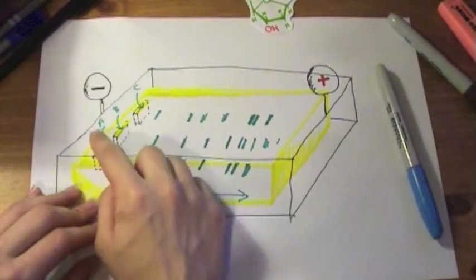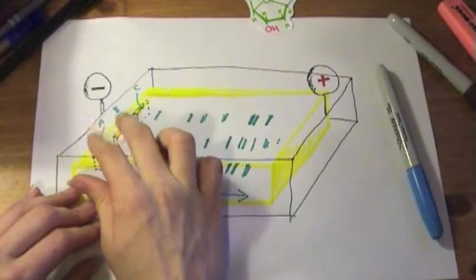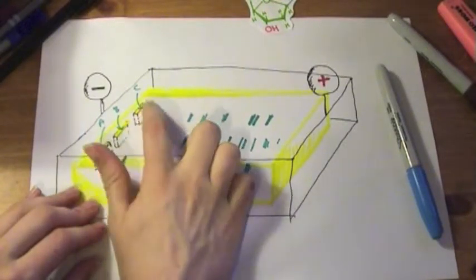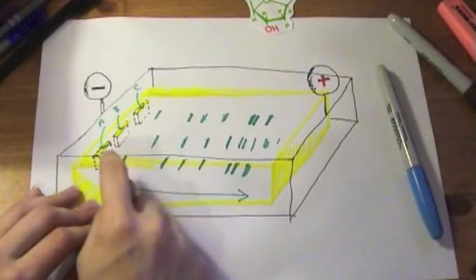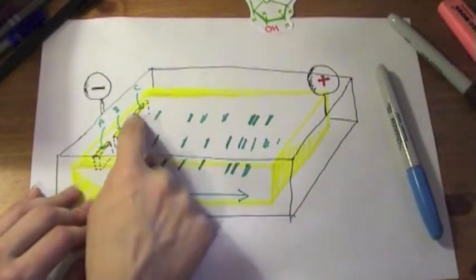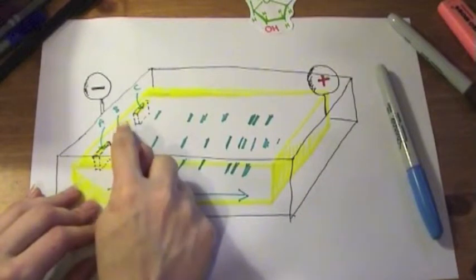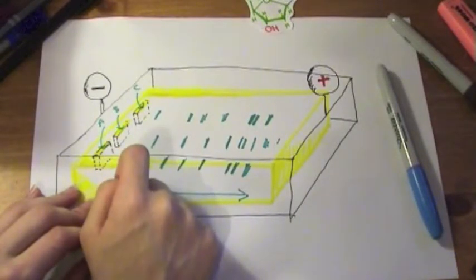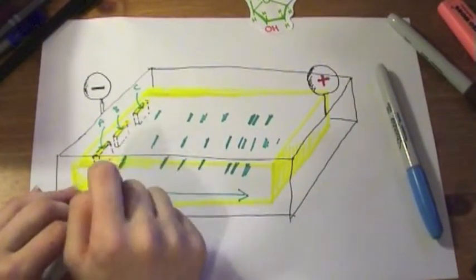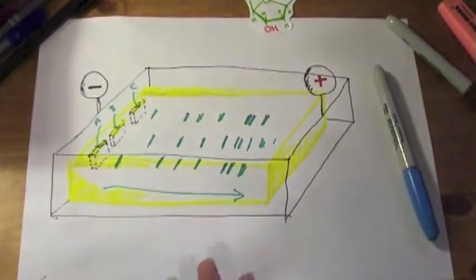So say these were two possible fathers and this was the child. This person has the most similar banding pattern to the child, so we'd say this guy's the father and this poor guy is being misled if he thinks he's the father. So that's like a paternity test.